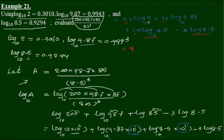Log 2 base 10 is 0.3010. Plus, log 9.87 is 0.9943.